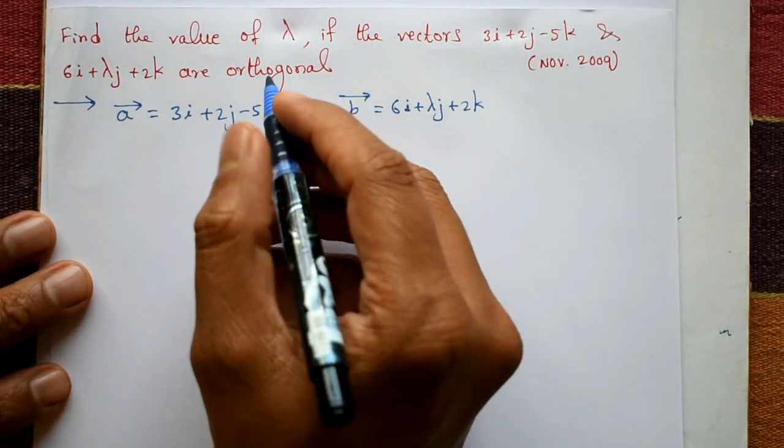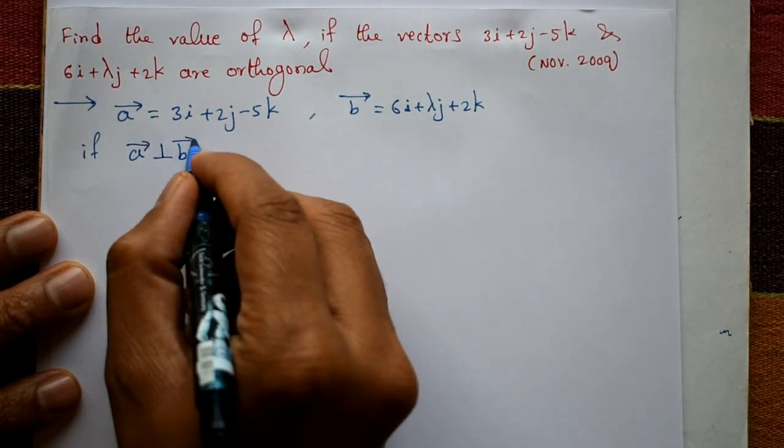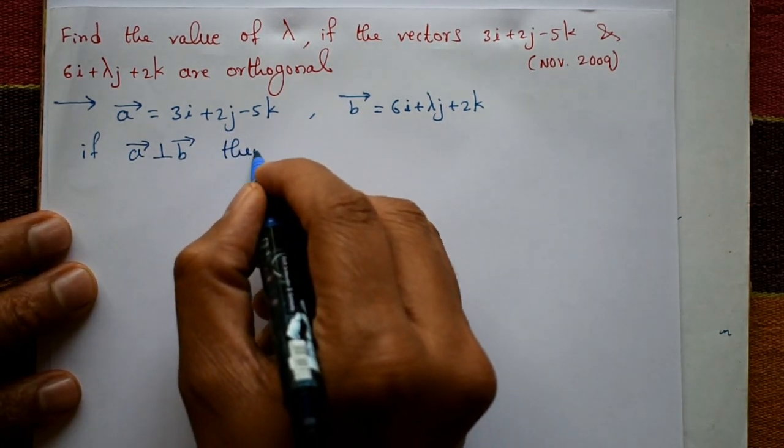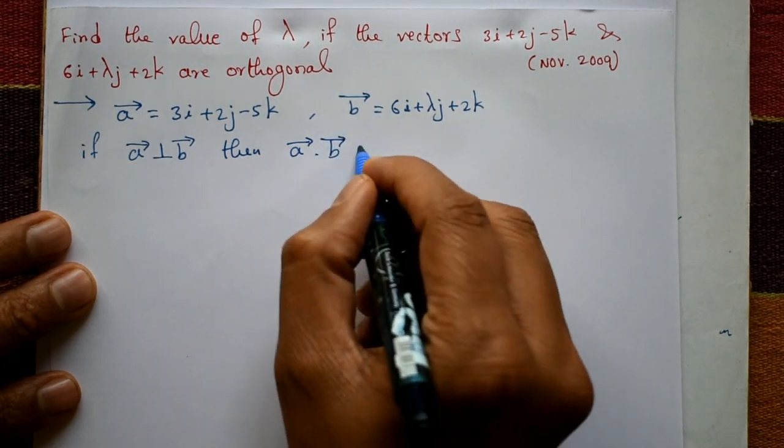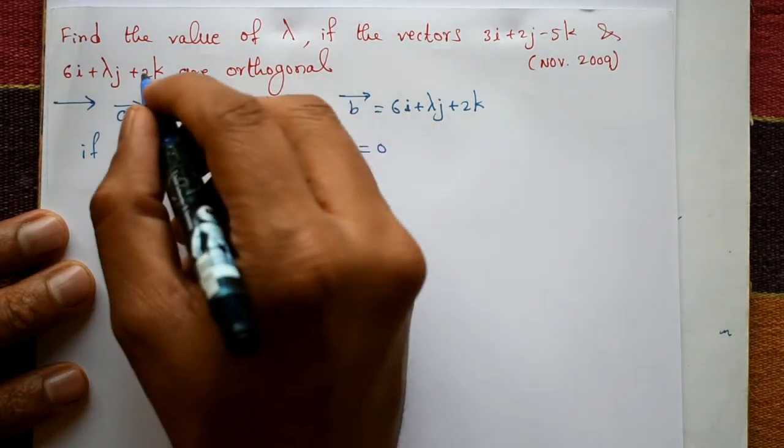Now, these two vectors are orthogonal, that means if vector a is perpendicular to vector b. This is orthogonal, then perpendicular means vector a dot vector b is always 0. Now take vector a and b and also find the lambda value.